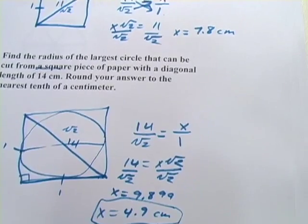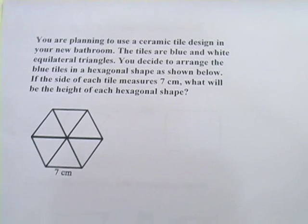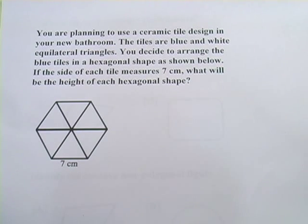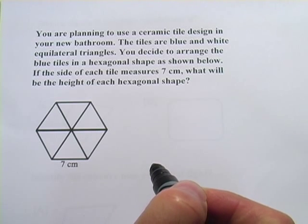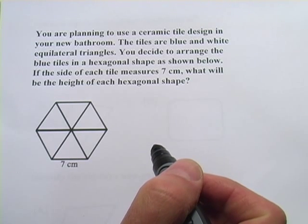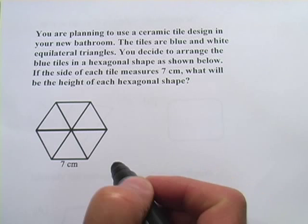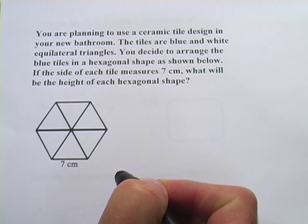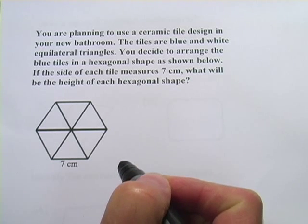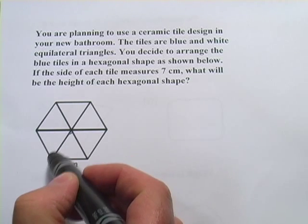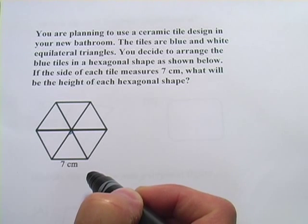Let's look at one more. This one's a little bit more involved. This one says, you're planning to use a ceramic tile design in your new bathroom. The tiles are blue and white equilateral triangles. You decide to arrange the blue tiles in a hexagonal shape as shown below. So each one of these little triangles in here is an equilateral triangle.